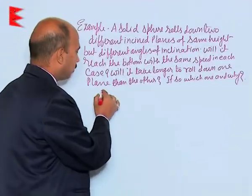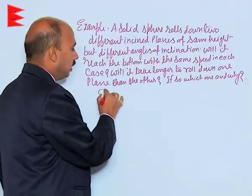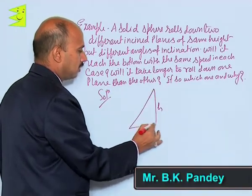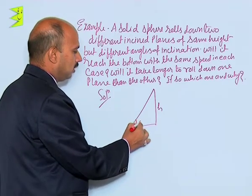Now, in this question, suppose this is a height h and you have an inclined plane, this angle is theta.